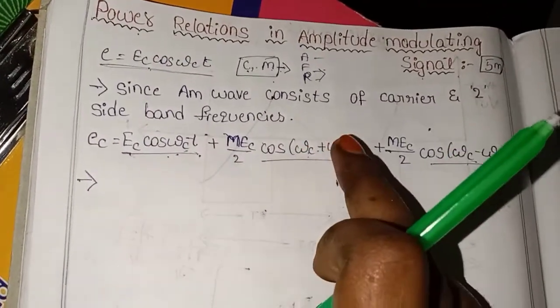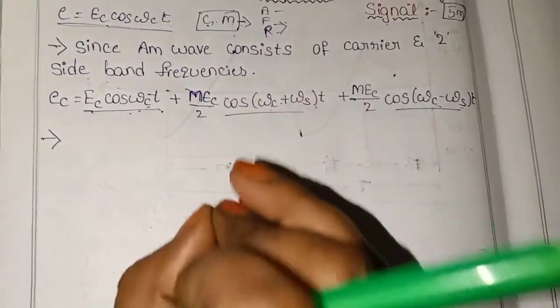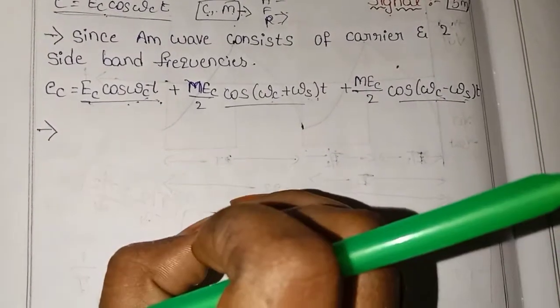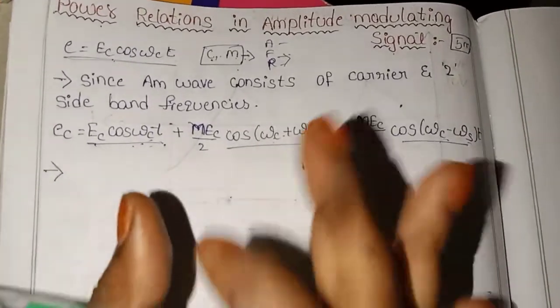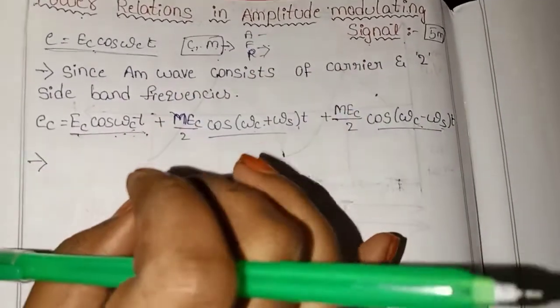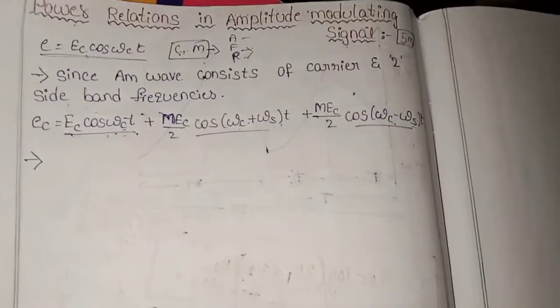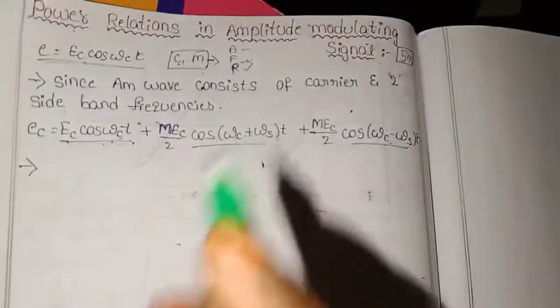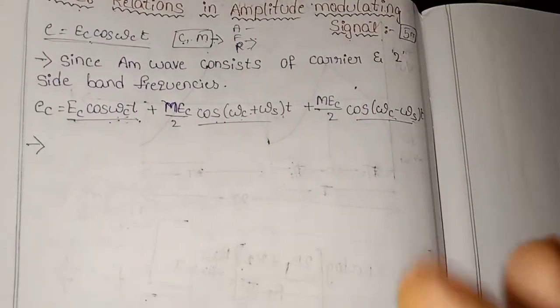The carrier signal carries the message signal. Think of it this way: the carrier signal is like a courier box. You can send a gift inside a courier box — the gift is packed inside. The packing cover is the carrier signal, and the message signal is the gift inside.